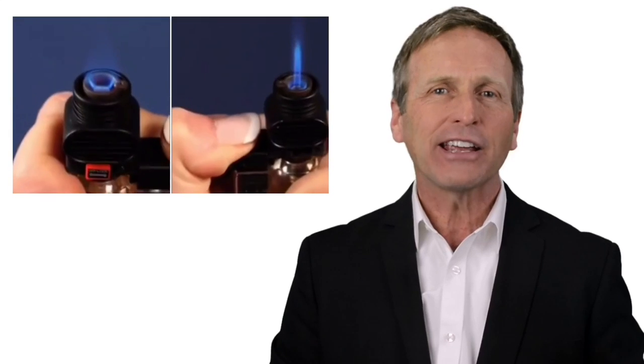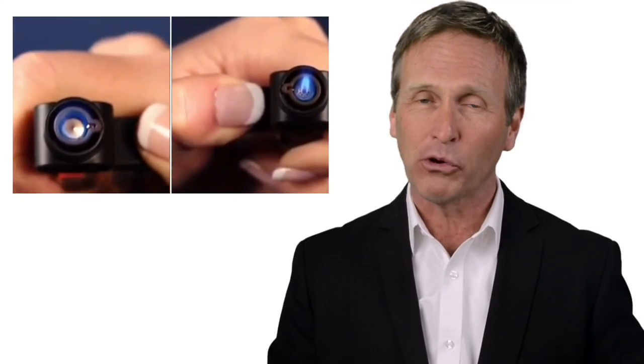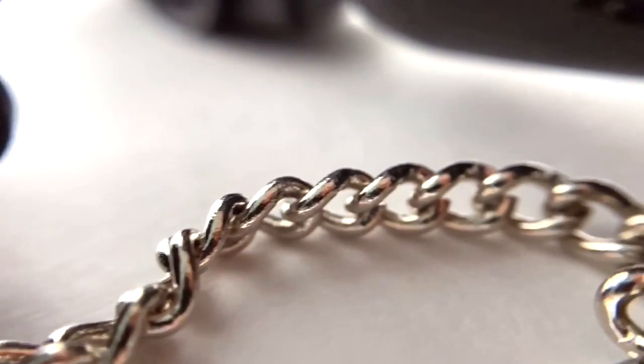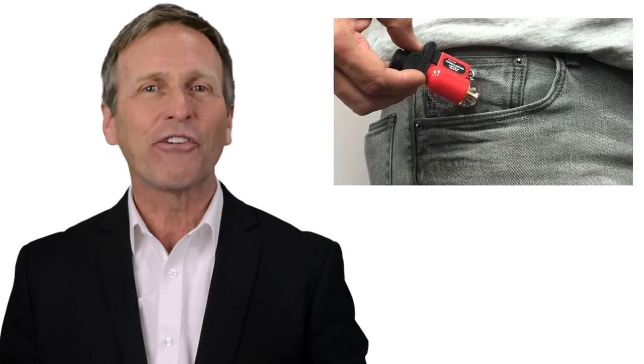The black and clear PB's are also available in a new wide torch flame version for even more surface coverage. The Pocket Blazer PB 207 torch lighters are available now online and in stores everywhere.